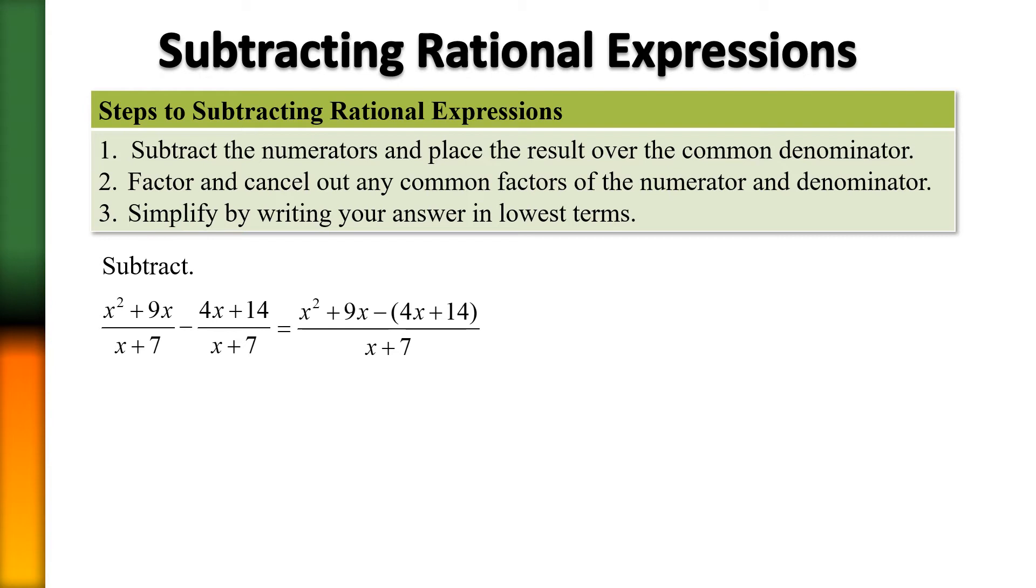Now we want to combine like terms, and here we can combine our x's. 9x minus 4x is going to give me 5x, so I have a trinomial now of x² plus 5x minus 14 over my common denominator of x+7.